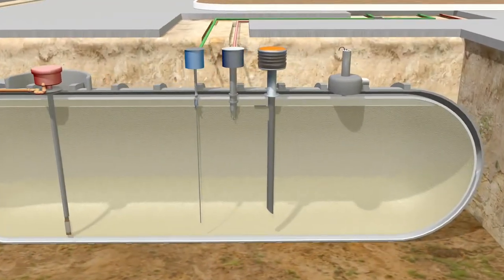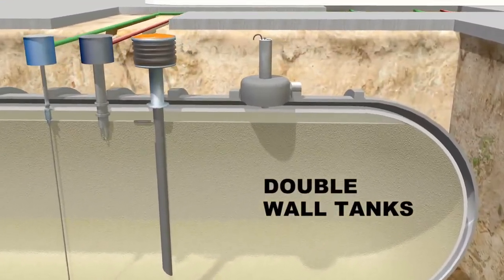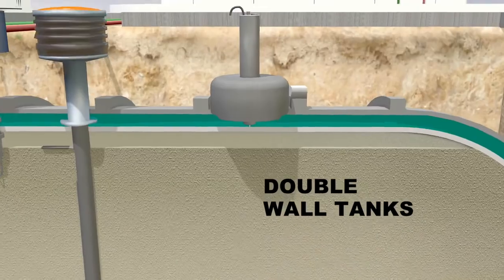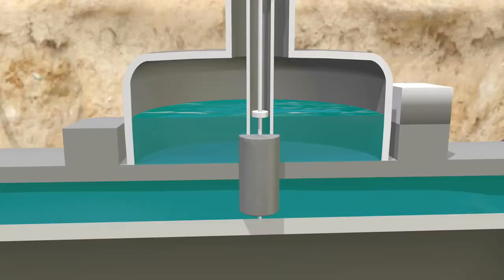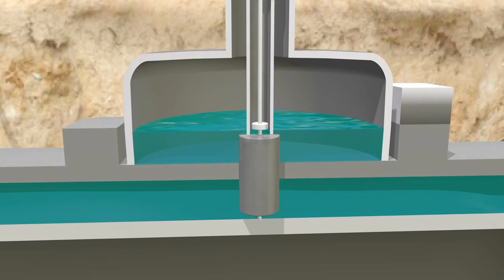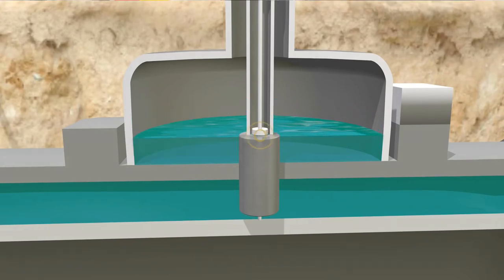Many storage tanks today feature double walls. The space between the walls is filled with brine. Sensors monitor the pressure level of the brine. A leak in either the inner wall or the outer wall will cause the pressure level to decrease and an alarm will sound.